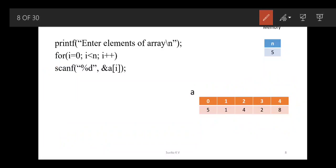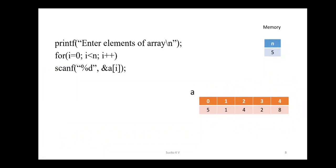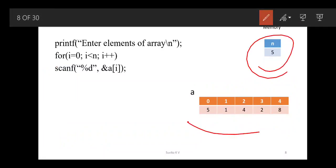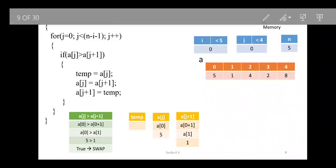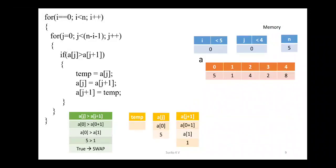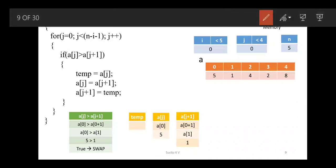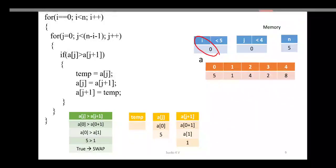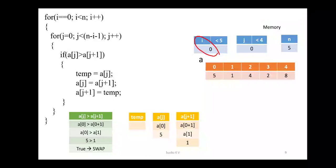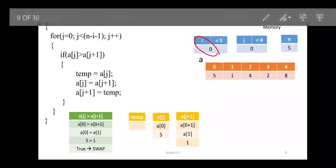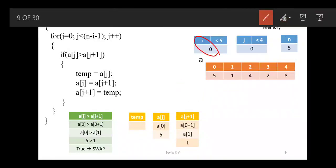After you enter the elements, it looks like this — you have the n value and the array elements ready. Now let us go with the logic. First: i = 0; i is less than n, and n is 5, so i is less than 5 — it enters the loop. Now for j = 0, j is less than n minus i minus 1.